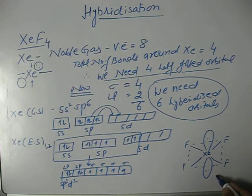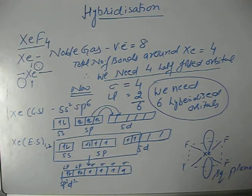The name of the shape, we can call it square planar. This is how we can explain the bonding in xenon tetrafluoride along with its shape using the concept of hybridization.